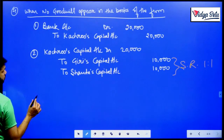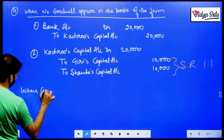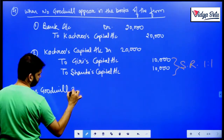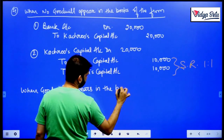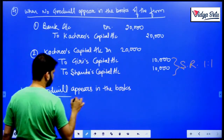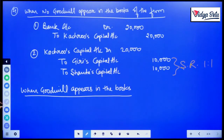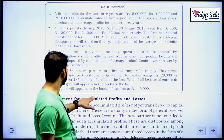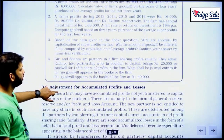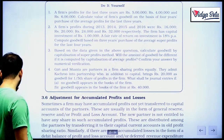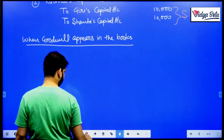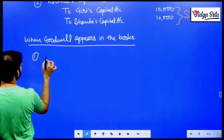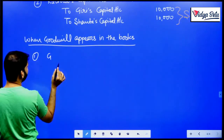It was not mentioned how this one-fifth share was taken, so we assume it to be equal because when it is not mentioned, the old ratio becomes the sacrificing ratio. The sacrificing ratio is 1:1. Next, when goodwill already appears in the books — at 40,000.